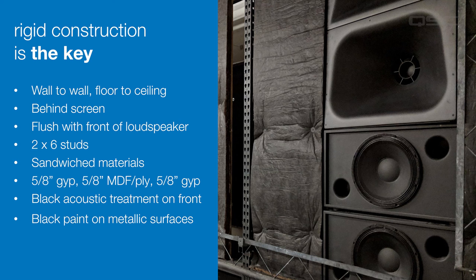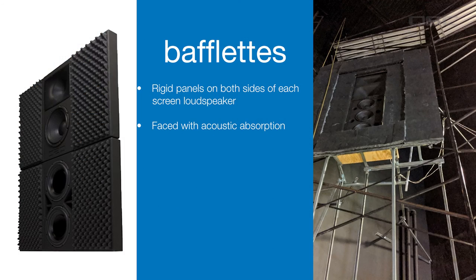When a permanent solid baffle wall is just not practical, wings or panels can be attached to the sides of each screen loudspeaker to achieve some of the benefits of a full baffle wall. The front face must be lined with acoustic absorption. A mini baffle or baffleette will never be as effective as a full baffle wall, but they are definitely better than nothing.